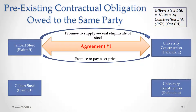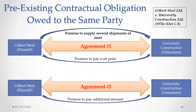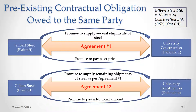So that led to agreement number two between Gilbert Steel and University Construction. Under agreement number two, University Construction had agreed to pay an additional amount for the steel, and that additional amount was for Gilbert Steel to supply the remaining shipments as per the original agreement — agreement number one.